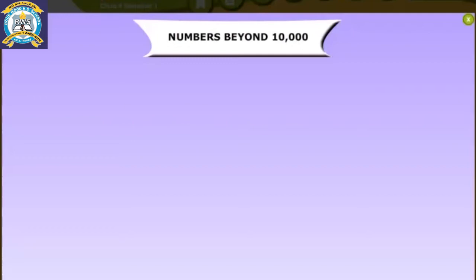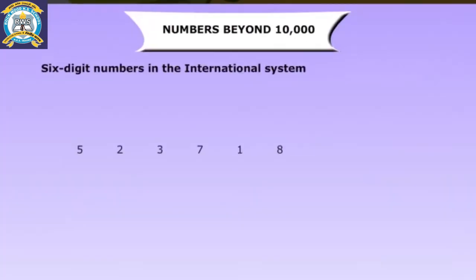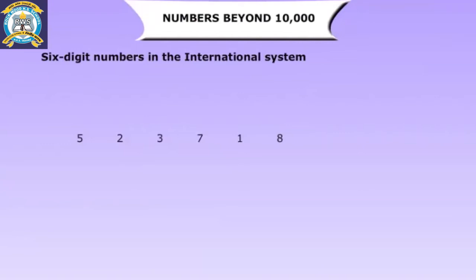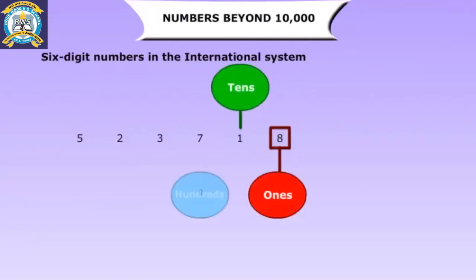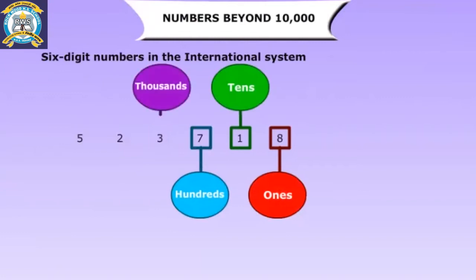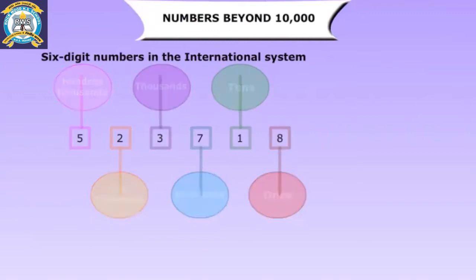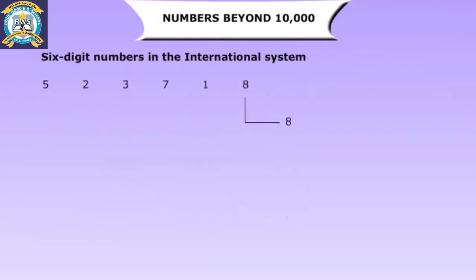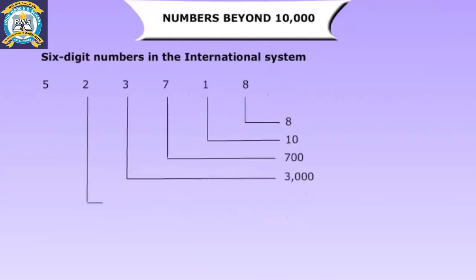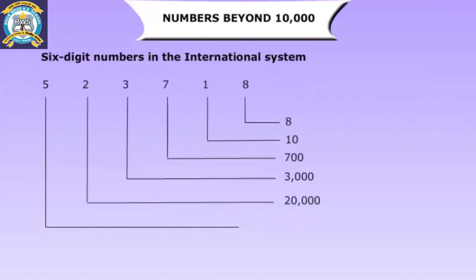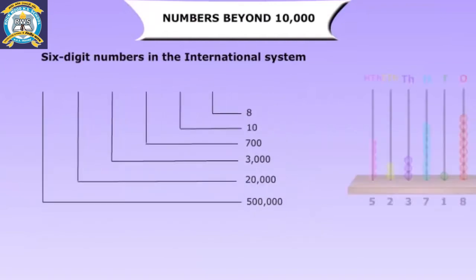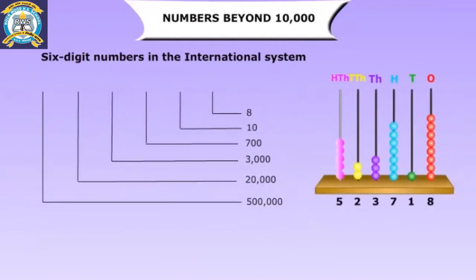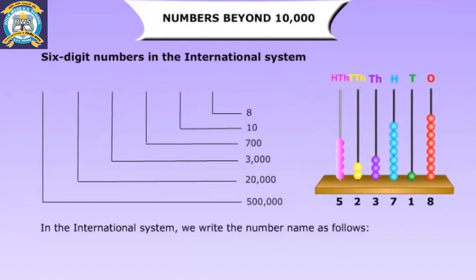Numbers beyond ten thousand: six-digit numbers in the international system. The place values are ones, tens, hundreds, thousands, ten thousands, and hundred thousands. For example: eight ones, one ten, seven hundreds, three thousands, twenty thousand, five hundred thousand. The number is represented on the abacus as shown.